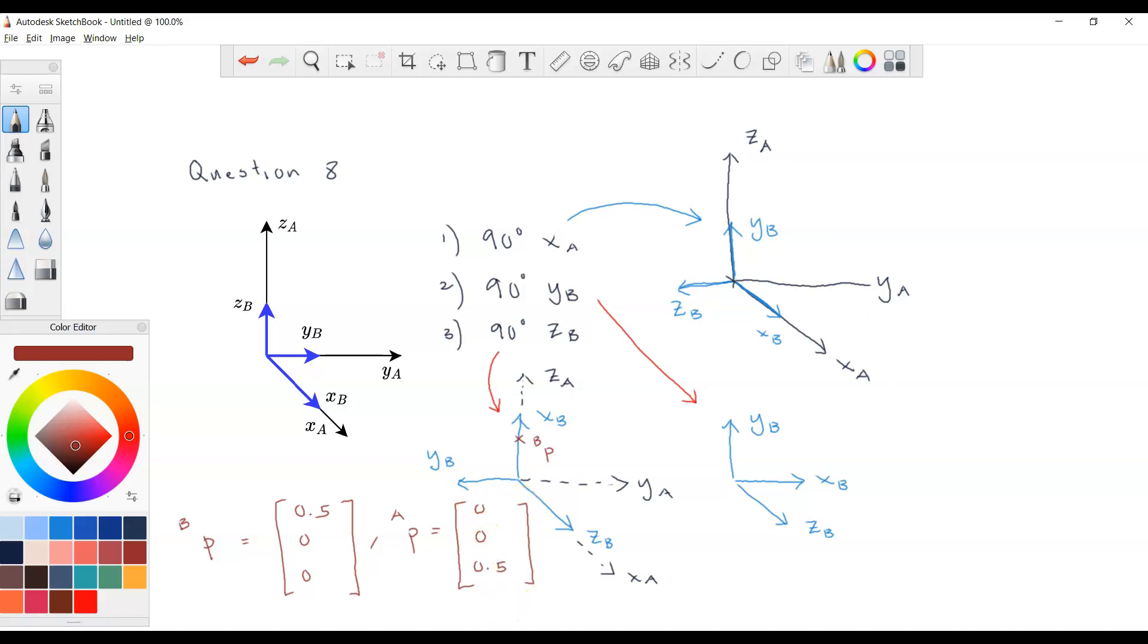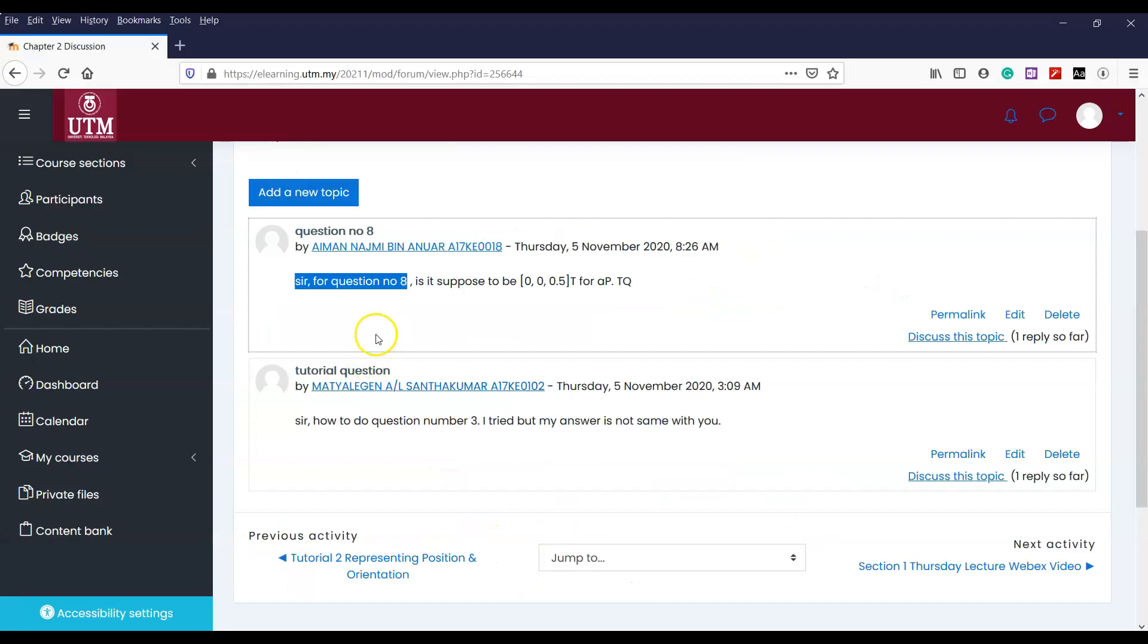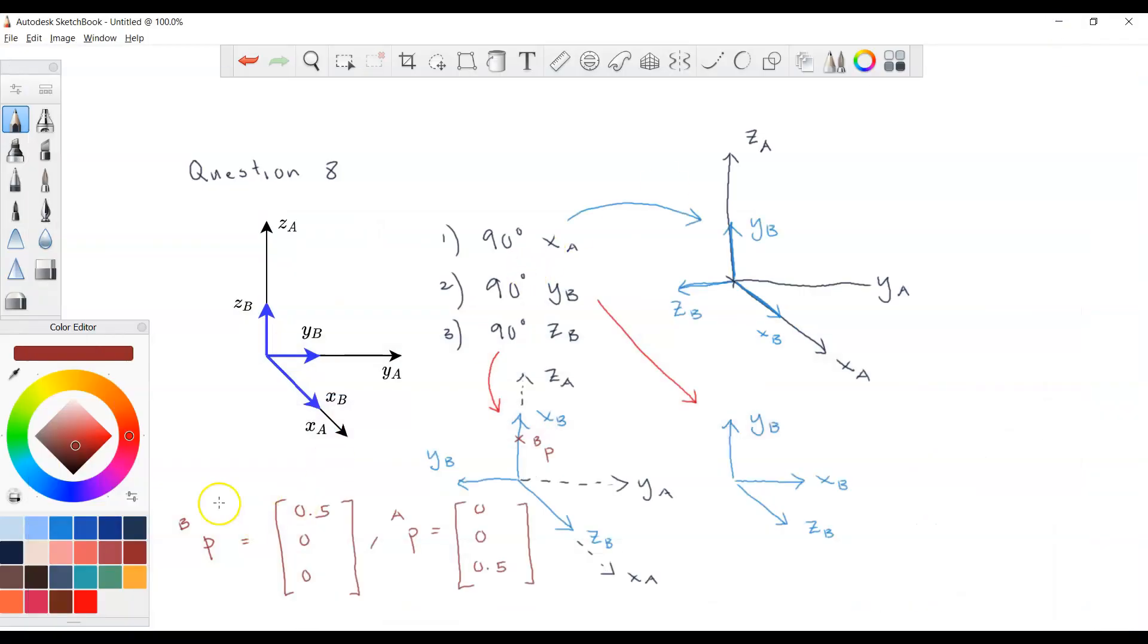So what was the question by Najmi? Aiman Najmi, supposed to be 0, 0, 0.5. Yes, correct. That's the answer. Maybe I mentioned it wrongly when I gave you the answer, but this should be the answer, at least for now. This is just by observation. Let's prove this by using calculation.